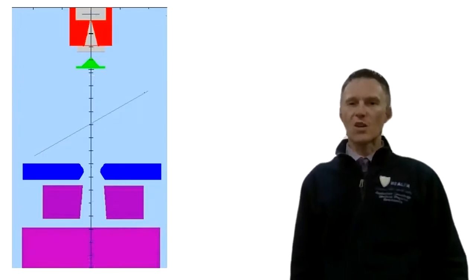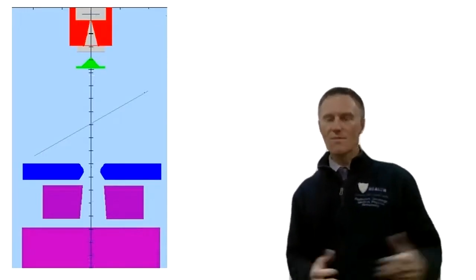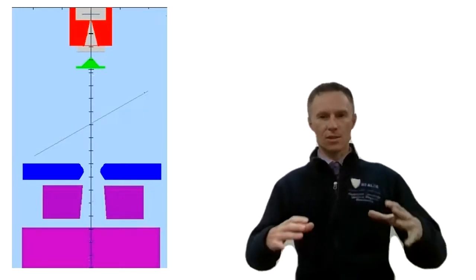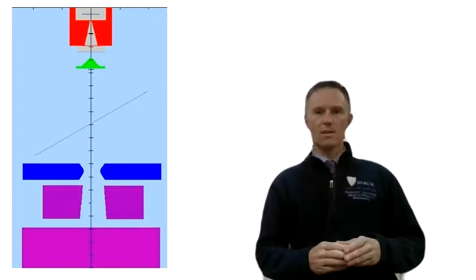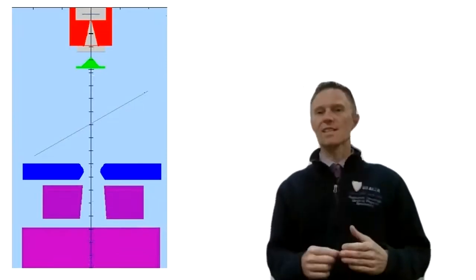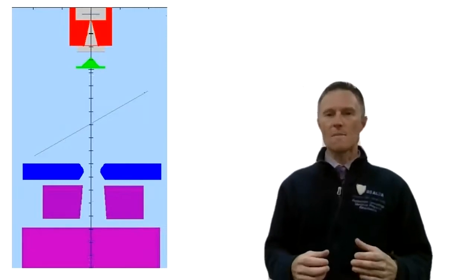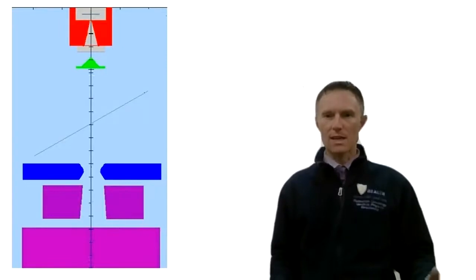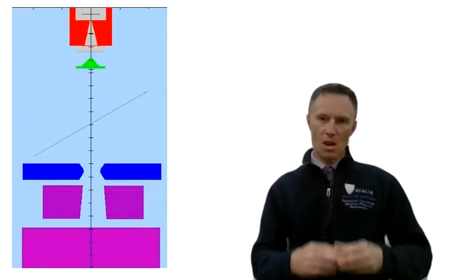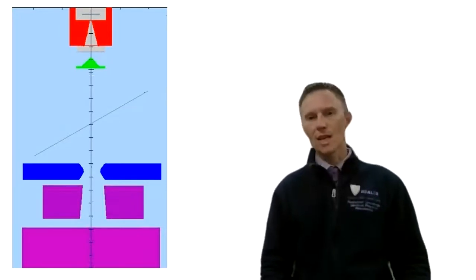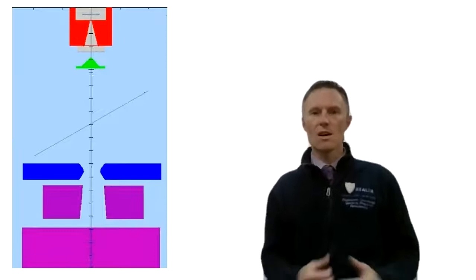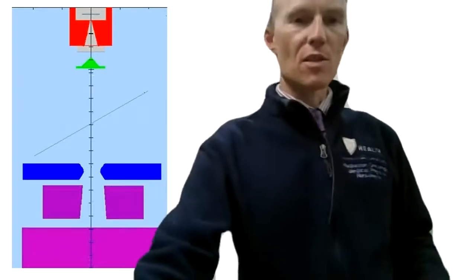Starting at the very top of this image, what we're looking at here in red is called the primary collimator. The primary collimator is essentially just a conical hole that produces a beam of circular cross section. As electrons strike the target and produce a beam of photons, the cross section will be circular. The beam diverges downwards, and in order to collimate that so it doesn't spill out over the sides of the jaws, the primary collimator is used.